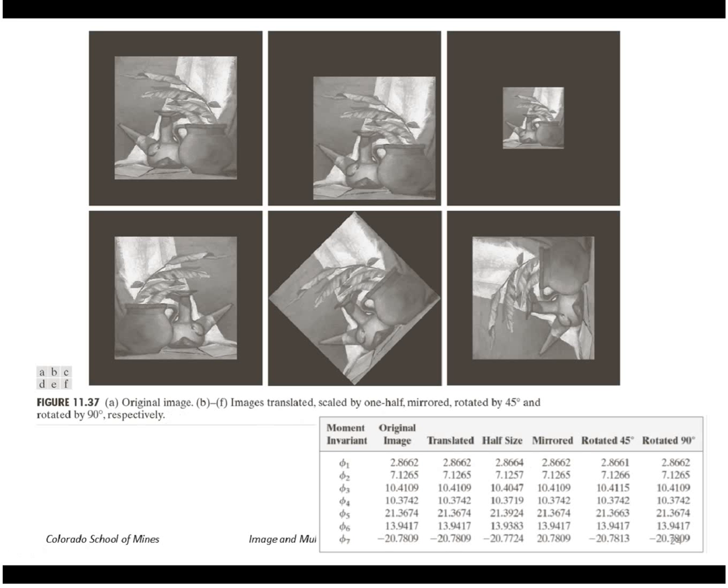And we have seven of those. So this shows an example image. Here we're not using a binary image. We're using a grayscale image, but we're still computing moments of that region. So what they've done is they've translated that region, changed the scale, flipped it, taken a mirror image of it, and rotated it. And here are the seven invariant moments for each of those images. And as you can see, the values are almost the same for each moment.